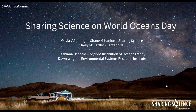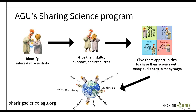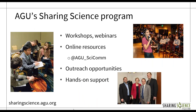We are part of AGU's Sharing Science program. AGU is the American Geophysical Union — a big Earth and Space Science Society with 60,000-plus members in 140-some countries. The Sharing Science program's goal is to teach scientists how to more effectively communicate their science to any audience. We provide skills, tools, and resources through webinars, workshops, online resources, an active Twitter account, and hands-on support.